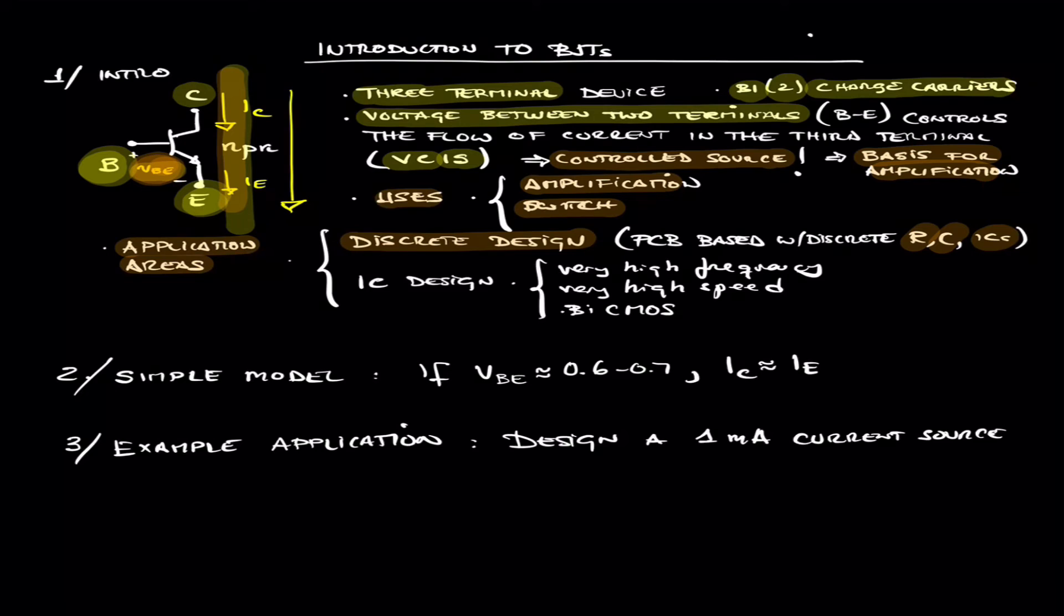And in IC design, there are some applications where the BJT is the semiconductor device of choice. Very high frequency applications, very high speed. Of course, you can combine it with MOSFETs as part of the same silicon monolithic to create BiCMOS circuits.